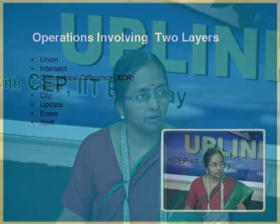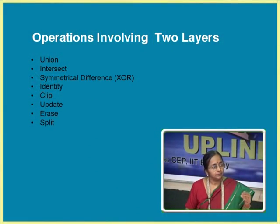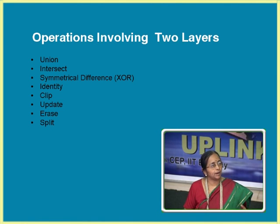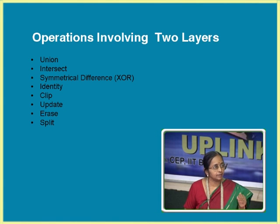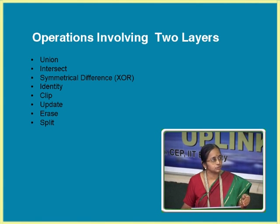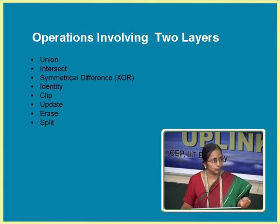In two-layer operations, just to summarize — same like what we saw in raster, we saw overlay, conditional table, map algebra — same way here you have functions like union, intersect, identity, XOR, clip, update, erase, split. These are some of the common functionalities available in any GIS tool which is vector-based.